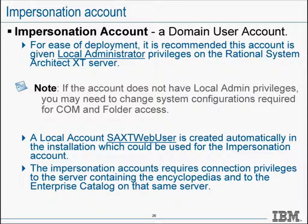By default, the SAXT installation creates a local user account called SAXT Web User. This account can be used as the impersonation account if required, provided it is given the necessary domain and other required privileges. If you define your own account or don't want to use this account, it can be deleted. The impersonation account will require connection privileges to the server containing the encyclopedias, along with additional privileges on the data server.